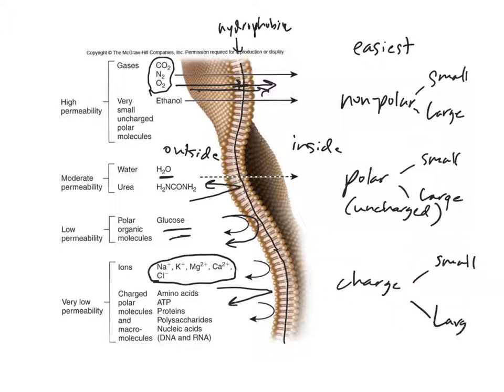And then when you have large things with charge, for example amino acids or DNA, RNA, any of those things, they pretty much definitely don't get through, because now not only do they have a lot of charge, they're also very large.